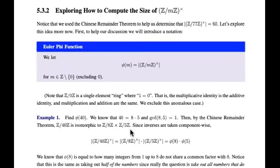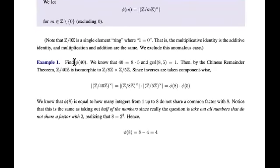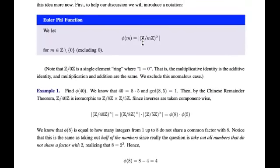Now let's talk about how to compute the size of Z mod MZ cross — the multiplicative group. The computation of its size is given by the Euler phi function: φ(M) is the size. Let's run through an example. Suppose we want to find φ(40) — the size of the multiplicative group when M is 40. We know 40 factors into its prime parts: 2³ times 5, or 8 times 5. These are relatively prime, so by the Chinese Remainder Theorem, the size equals φ(8) times φ(5).